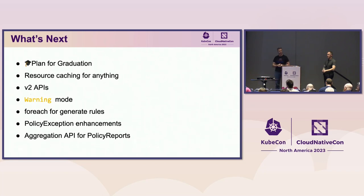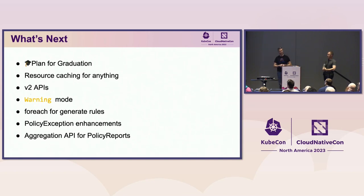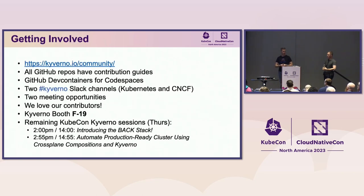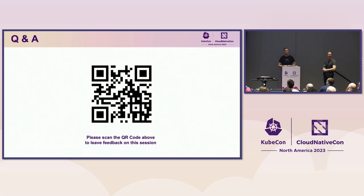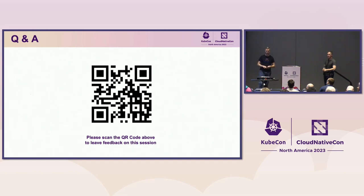What's next? We are currently planning for graduation. We're going to be looking at resource caching for any-version APIs so our policies stay up to date, a new warning mode, for-each loops for generate rules, policy exception enhancements, and aggregated APIs for policy reports. Come see us at booth F19, and there are a couple more sessions happening on Thursday. We have about two minutes for questions — please step to the mic so it's on the recording.